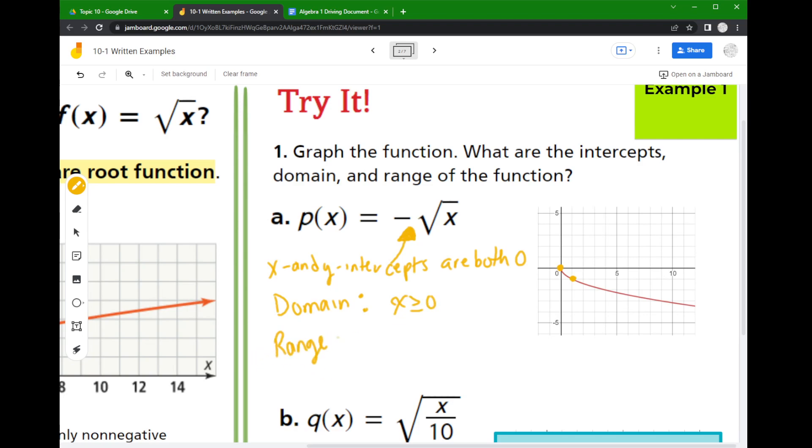Now the range is going to have changed here because I flipped our graph upside down. So if I'm thinking about up and down movement, this graph stops going up at y equals 0. And if I go down this graph goes down for forever.